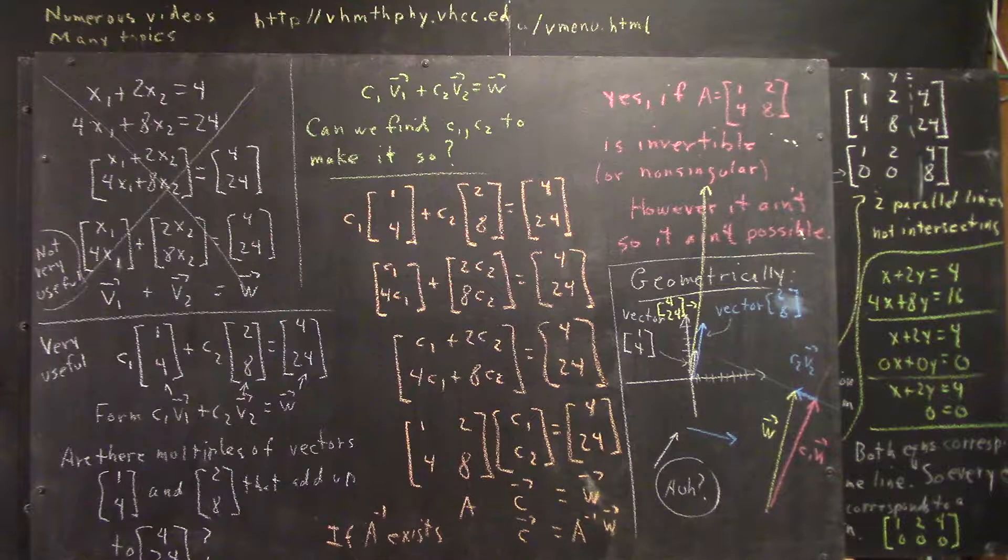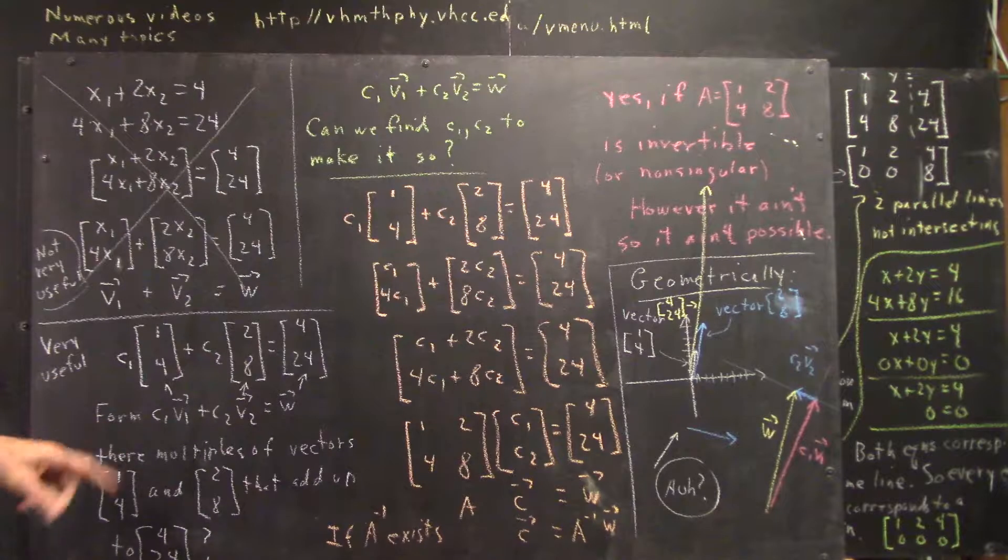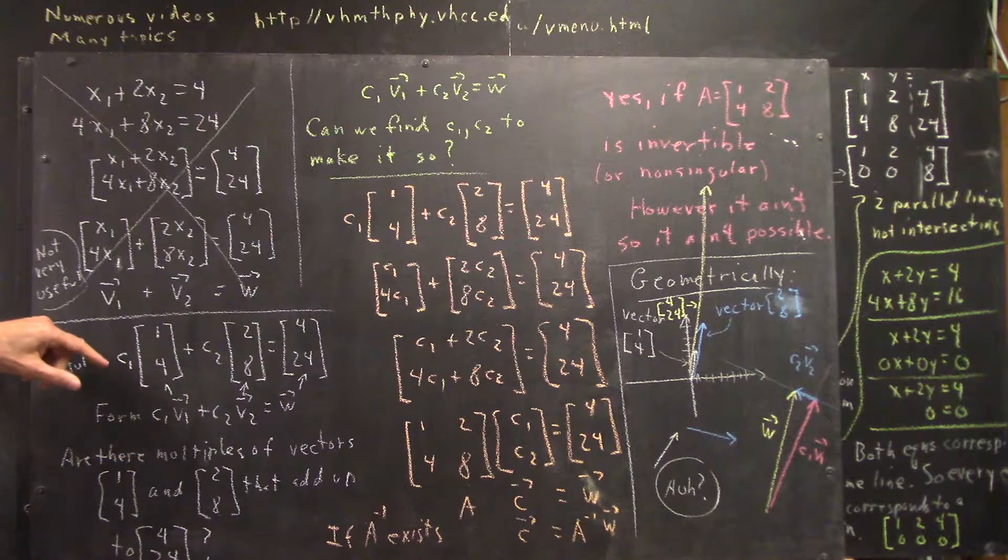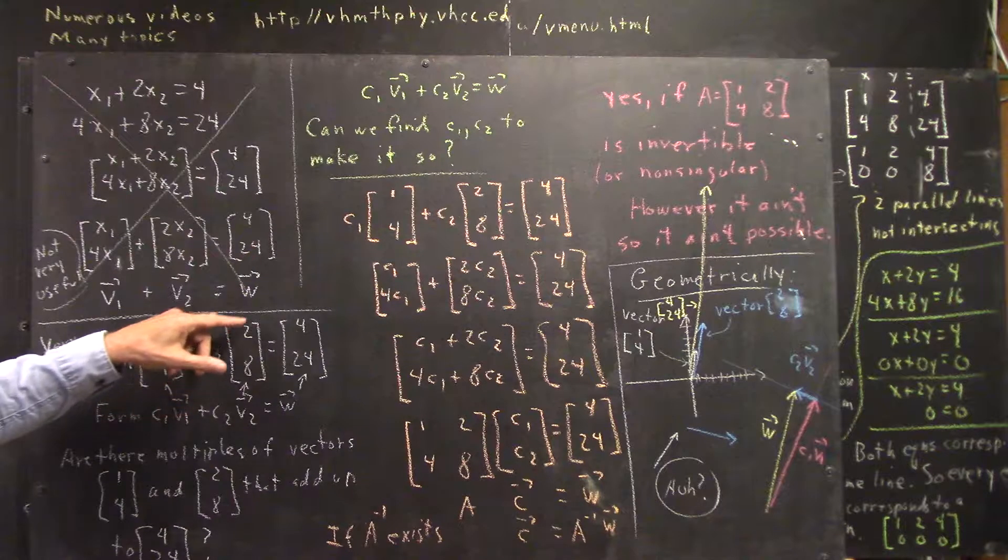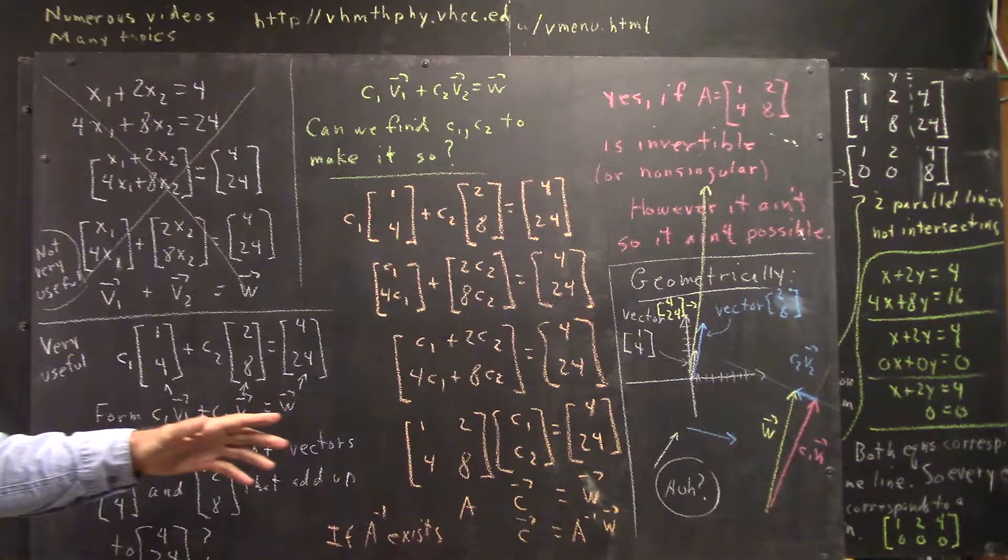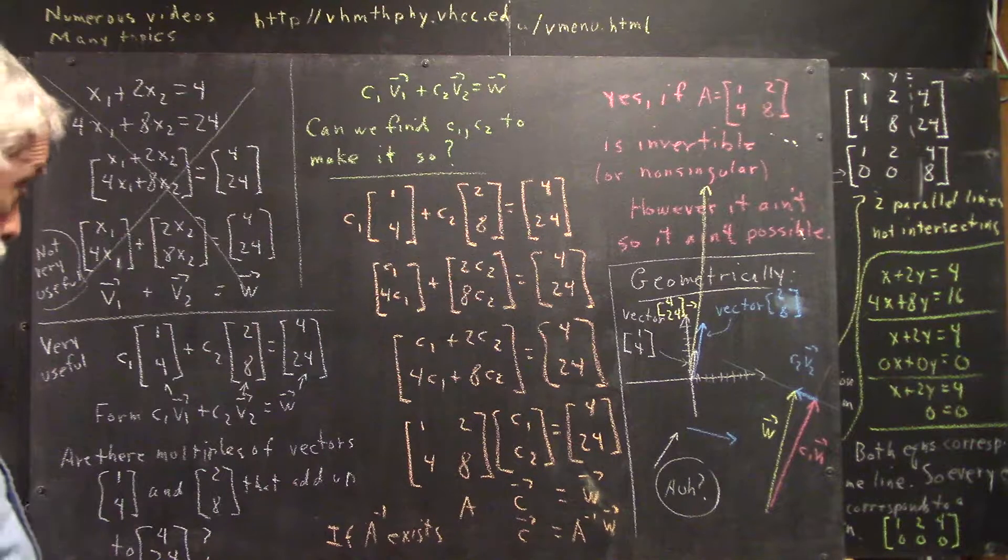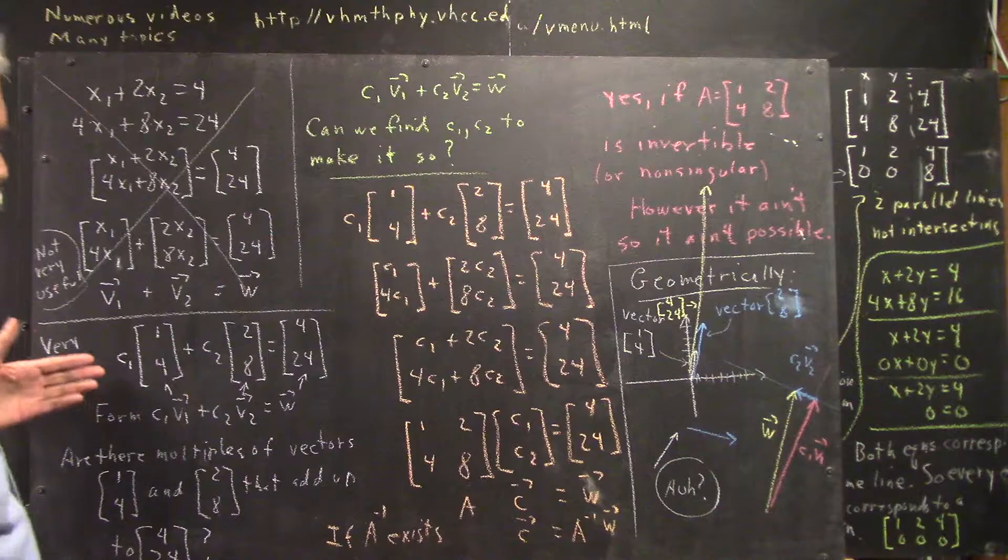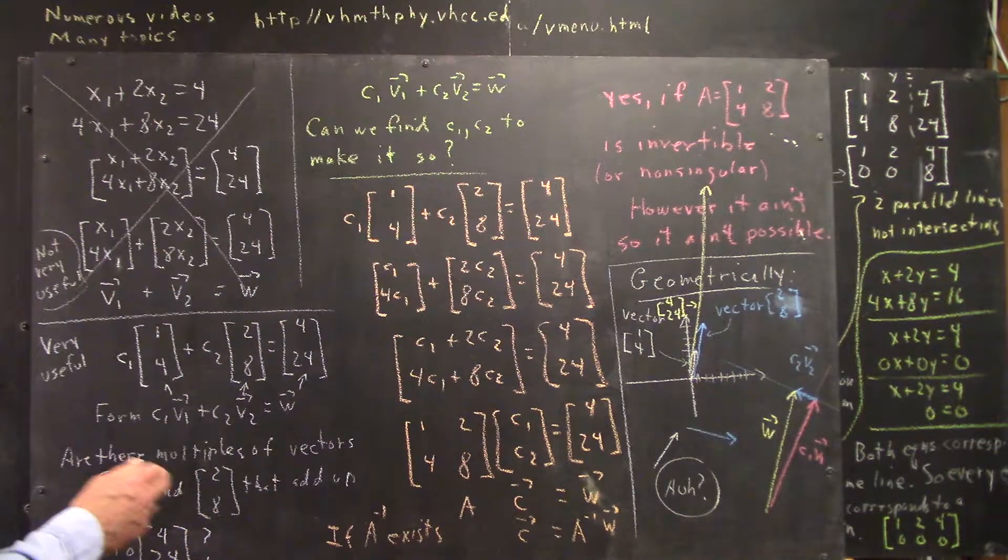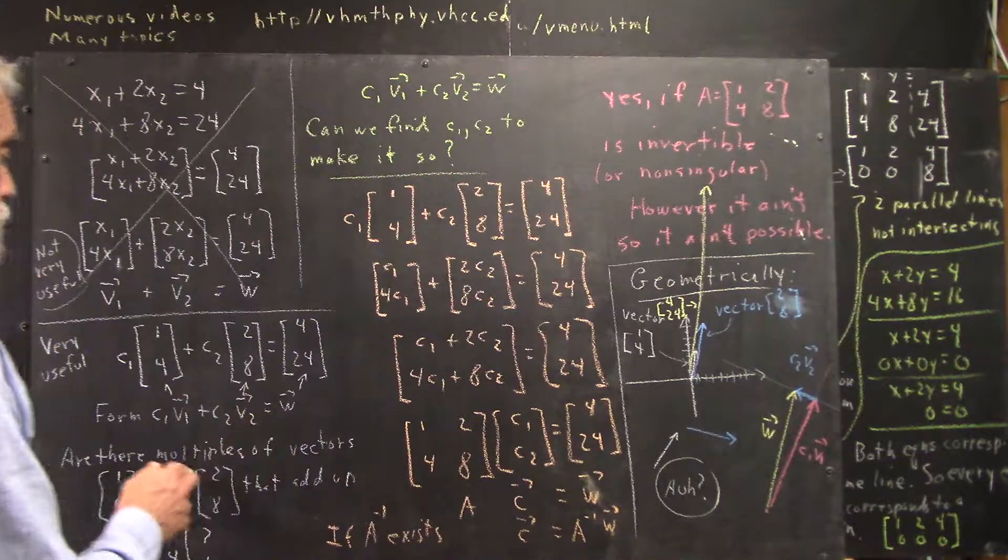But this is very useful. c1 times this column vector plus c2 times this column vector equals this column vector. Question is, is there a solution? Can we find c1 and c2 that make it so?